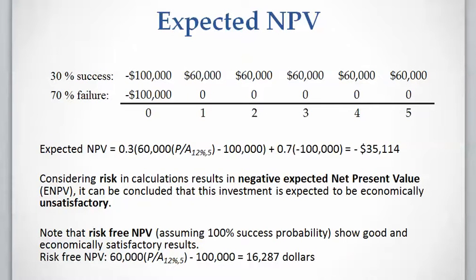If we consider risk in this project — assuming 30% probability of success and 70% probability of failure — we get a negative expected NPV, which means this project is not a good investment. Note that the risk-free NPV, meaning 100% probability of success, would be a positive number, indicating the project is economically satisfactory without risk.